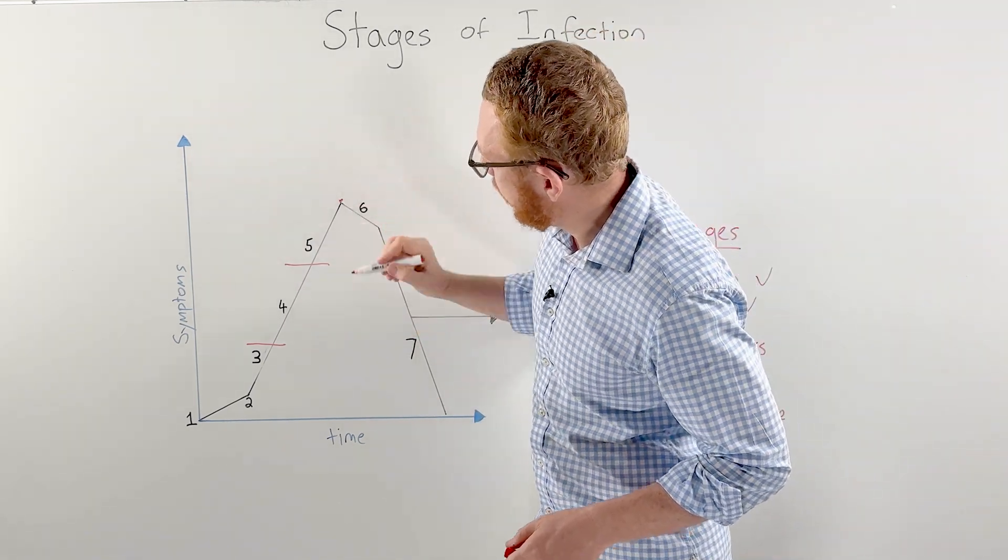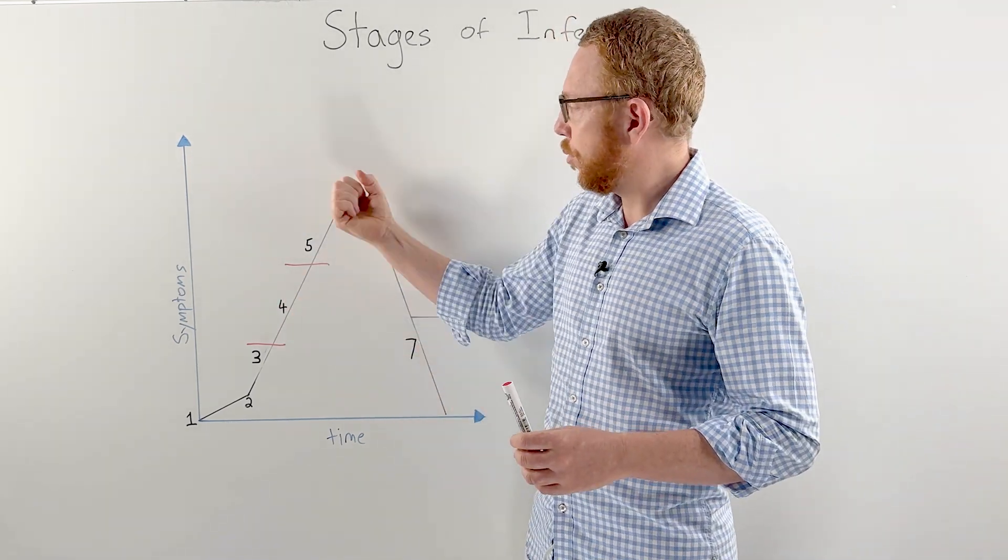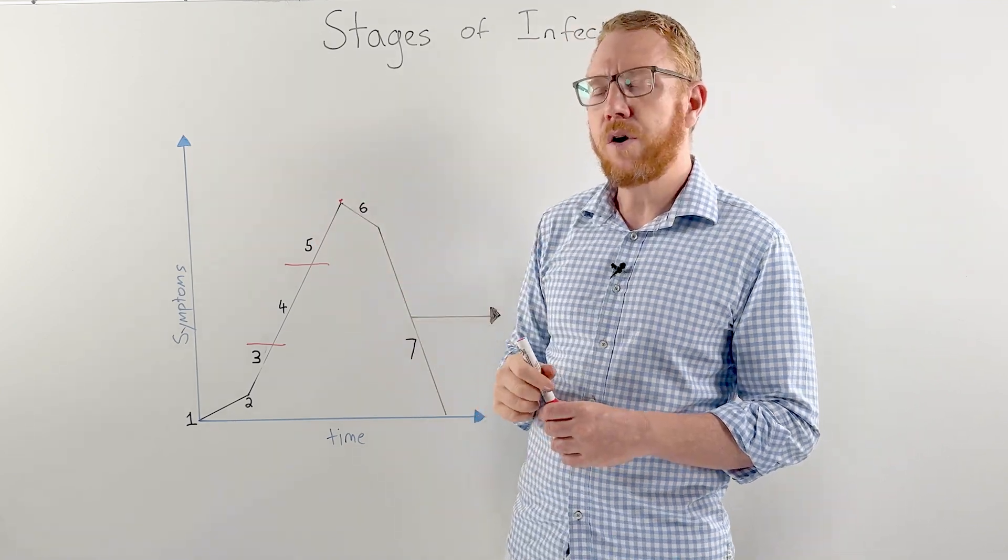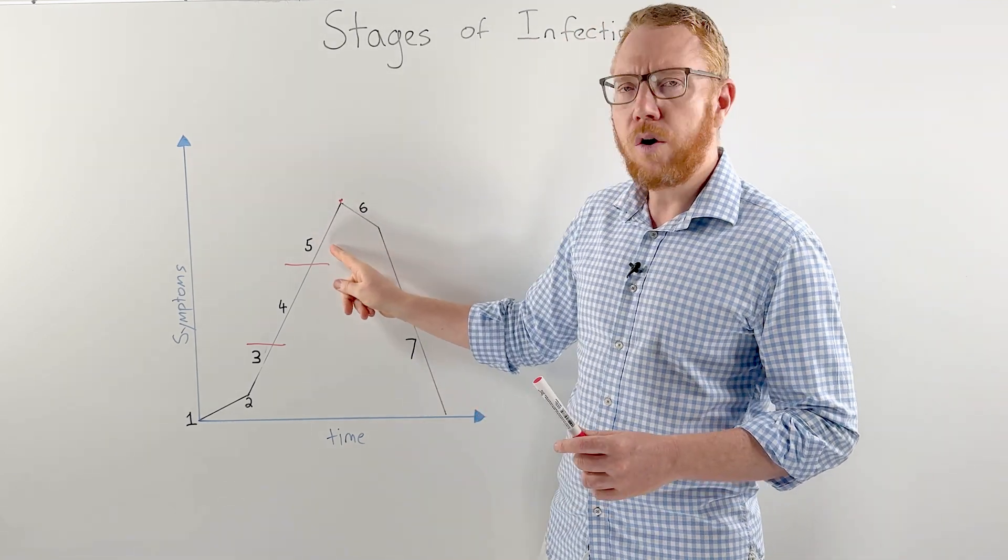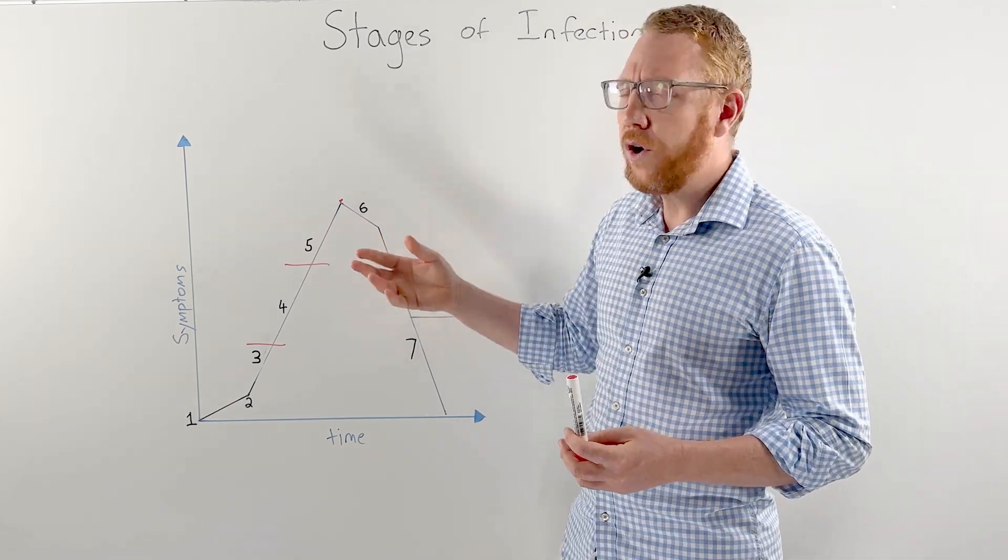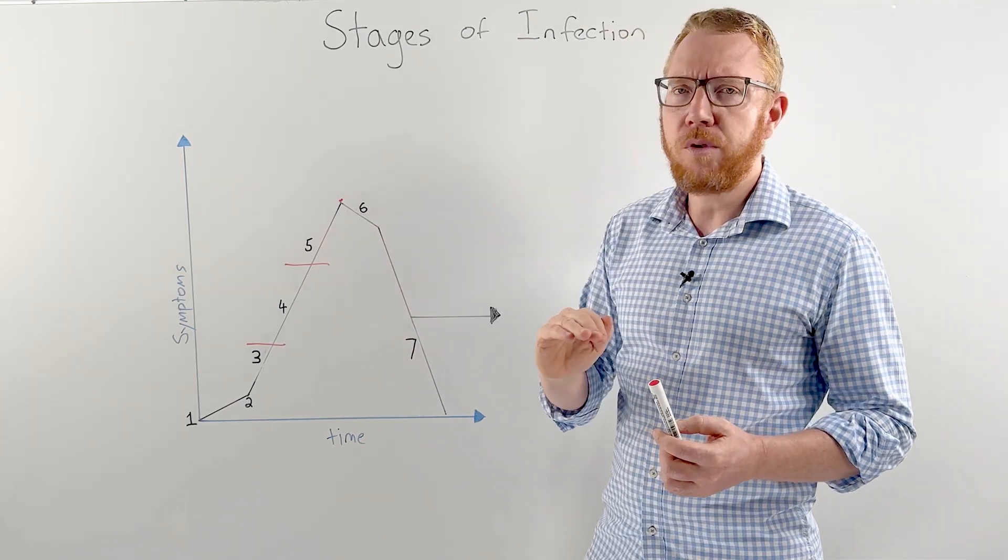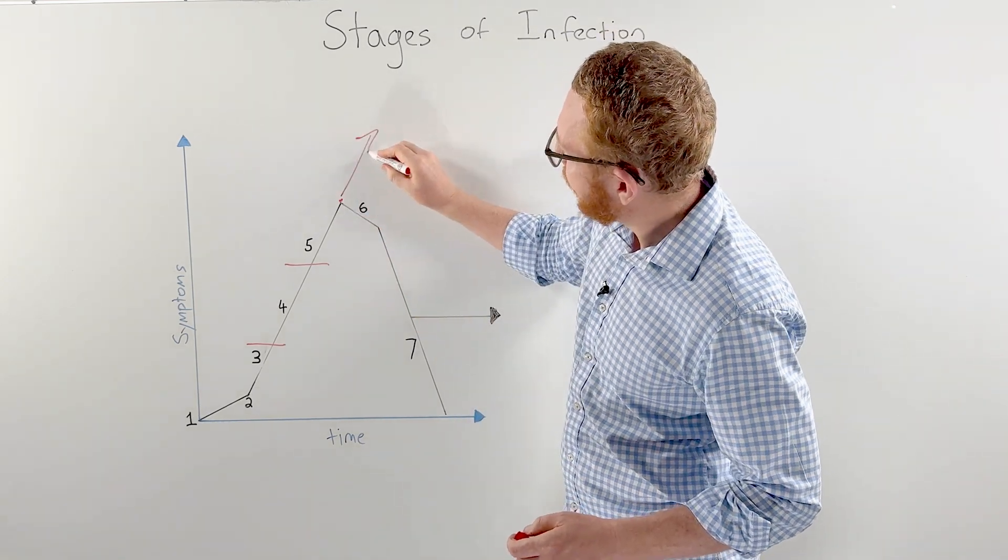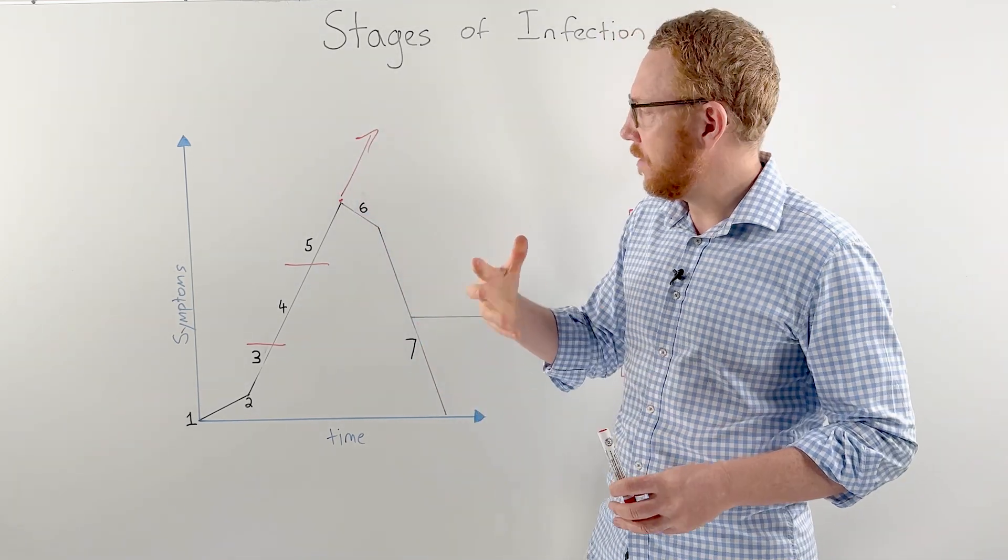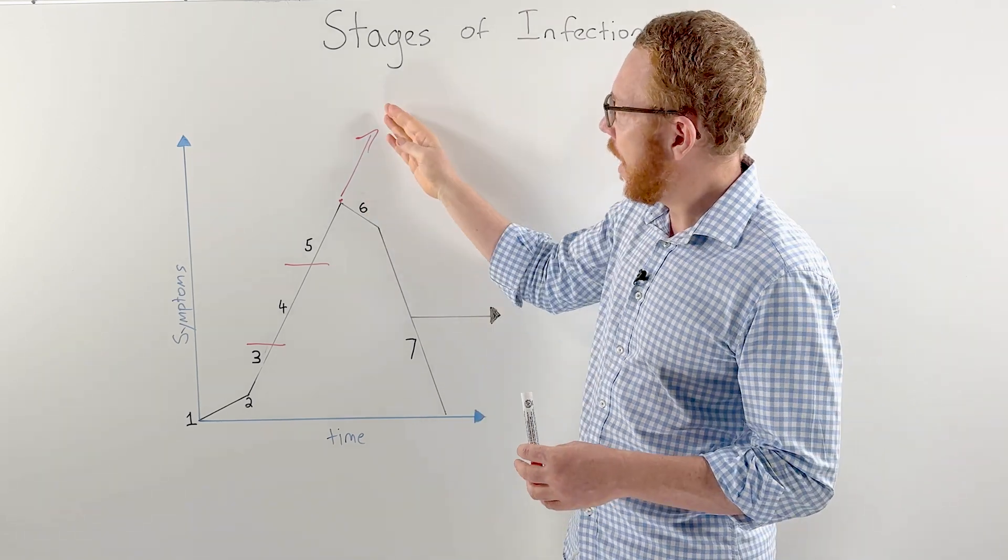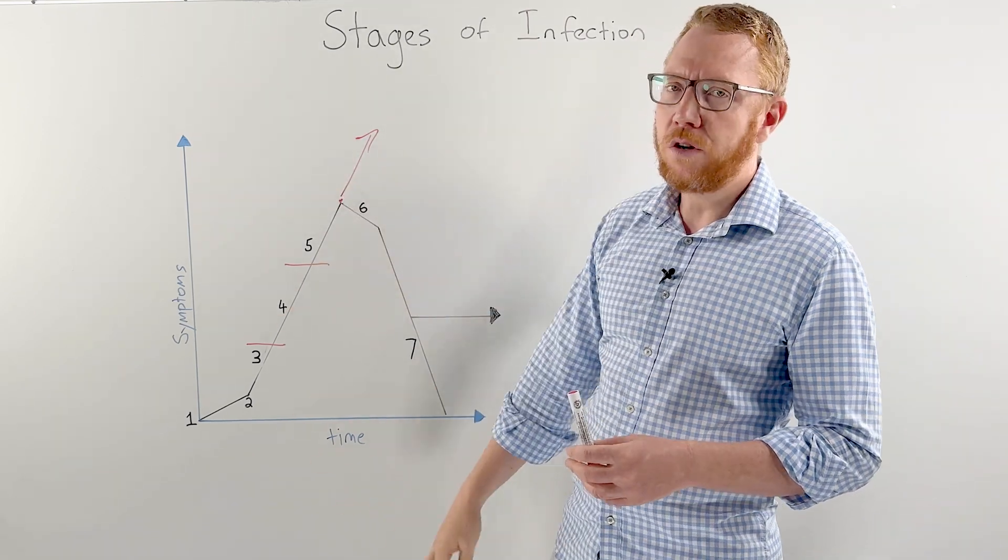Hopefully at this point, your immune system starts to pull it in check and start decreasing the symptoms and the number of the organism. But if the microorganism is really virulent, really nasty, or you are immunocompromised, or your immune system isn't adequate, it will just continue to go up. And what will happen there is you can develop sepsis, septic shock, and even leading to death. So that is obviously something we are wanting to avoid.